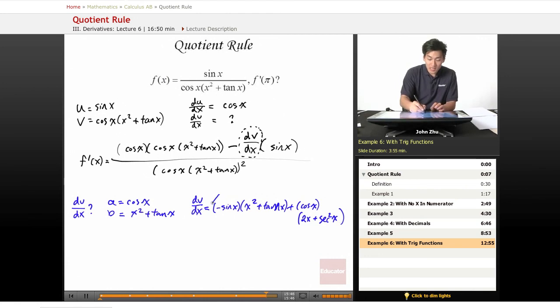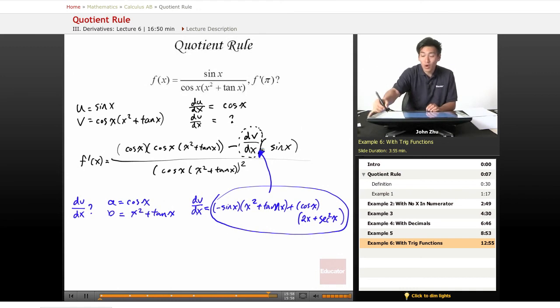So then we just take this expression and plug it in right here. Once again we can multiply everything out or realize that we have to plug in a pi term, so we just do it directly. And after quite a bit of arithmetic, we should arrive at the conclusion that the answer is 1 over pi squared.